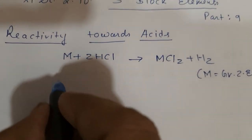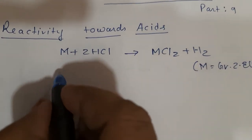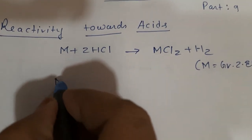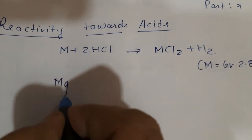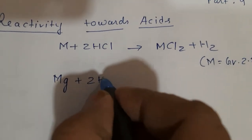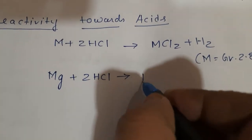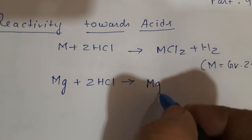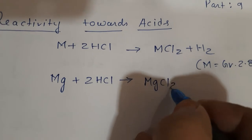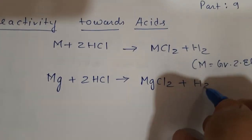If you take any example, let us talk about magnesium. Mg + 2HCl will give us MgCl₂, magnesium chloride, plus H₂ will be liberated.